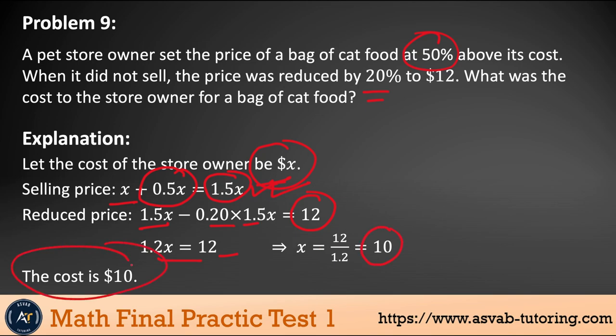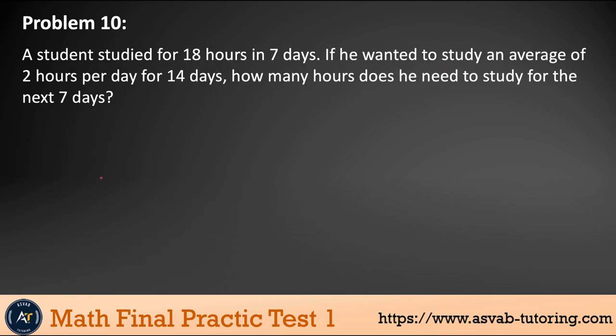So the correct answer was $10, right? So the owner actually buy the cat food with $10 with 50% above the price. And then bring it down to 20% and that was $12, right? So you could do that.